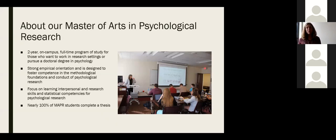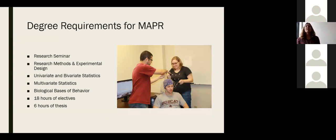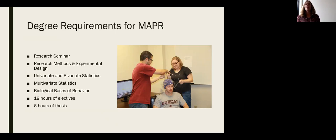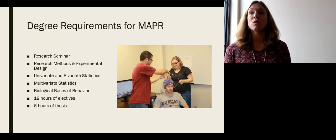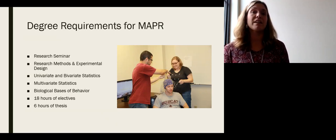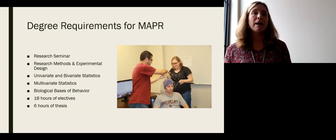Students take a number of required and elective classes in this 38-hour program. Required courses include research seminar, research methods and experimental design, univariate and bivariate statistics in the fall, multivariate statistics in spring, and biological basis of behavior typically in spring of the first year. In the first year, students take one elective per semester; in the second year, two electives per semester, along with thesis courses.